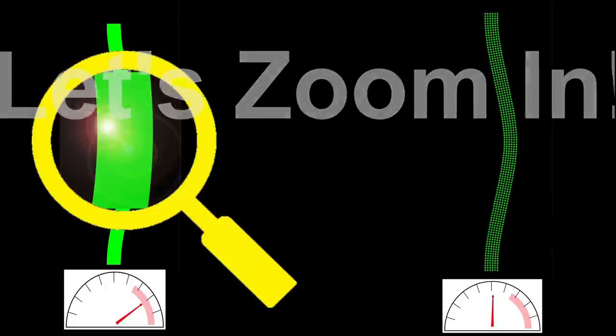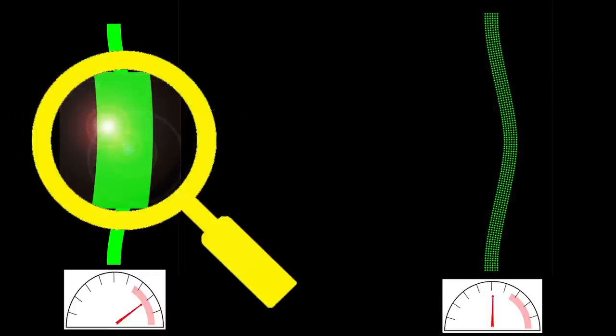Let's zoom in to see how this happens. When a regular beam buckles, it is compressed on the left and stretched on the right, but the material behaves the same way to stretch and compression.